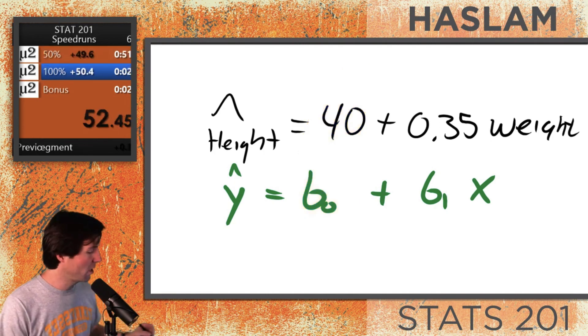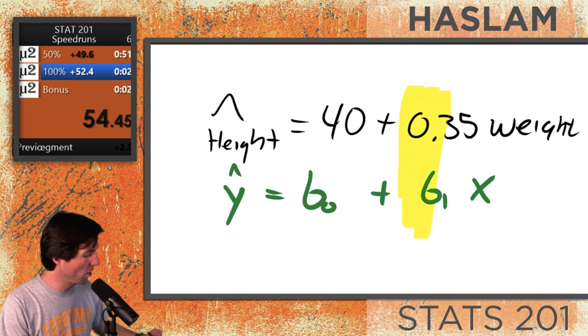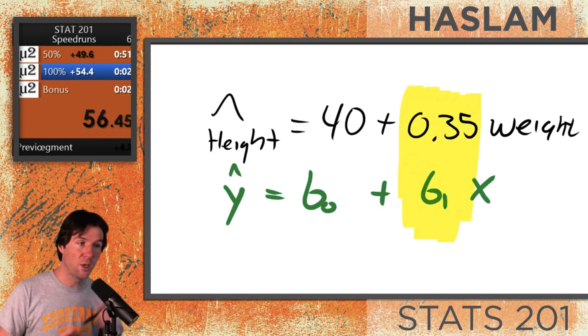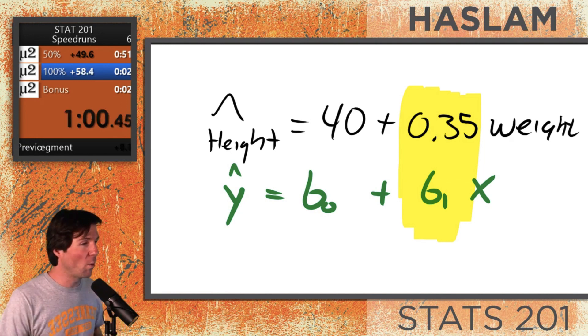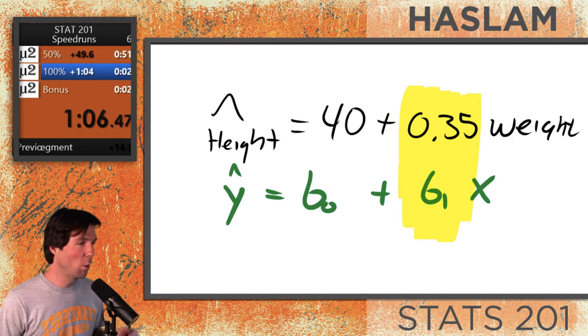For the next one right here, we have the slope. Now when we look at the slope right here, the slope is B1. And you're going to hear me say 1 twice in this interpretation. So, for each one unit increase in x, we expect y to increase by B1.